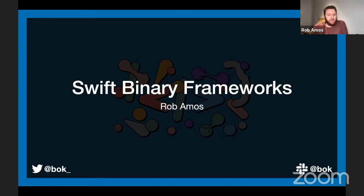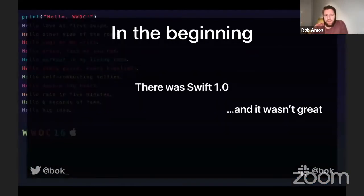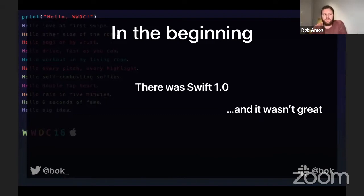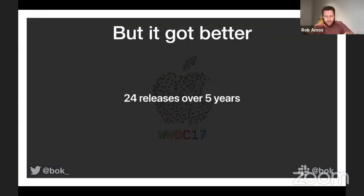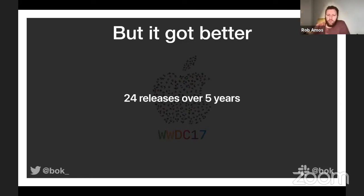So if we go back a little bit — in the beginning there was Swift, and it wasn't really good back in those days. I look back at them with rose-colored glasses every now and then with a little nostalgia, but it really wasn't that good. It was still very much a preview, kind of like SwiftUI is these days. But it got heaps better — 24 releases over five years, a lot of that for Linux support. We got multi-platform support, Codable, and from about Swift 4 onwards it was pretty much ready for prime time.